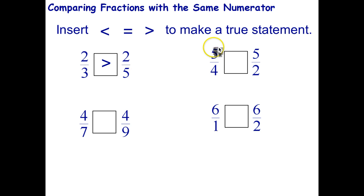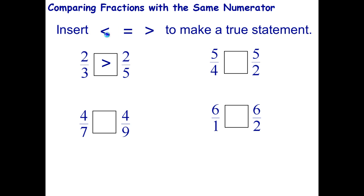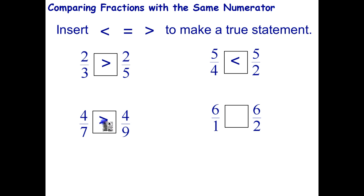Let's see how you went. If you divide a pizza into halves and you get five slices, that's more pizza than if you divide a pizza into quarters. So five-quarters is less than five-halves. Four-sevenths is more than four-ninths because you're dividing the pizza into smaller pieces and you're still getting four slices.